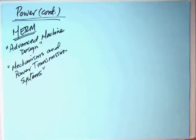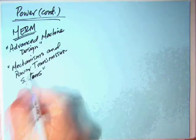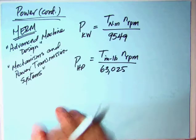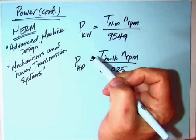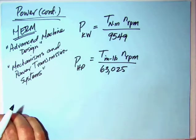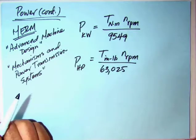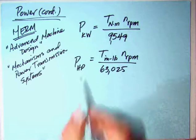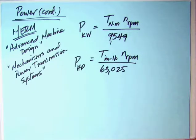From this particular chapter, and two other chapters in the MERM—the advanced machine design chapter and the chapter on mechanisms and power transmission systems—the following two equations appear. You have power in kilowatts: torque is to be in newton meters, your angular velocity is to be in RPM, and you divide that by 9,549. Power in horsepower for the U.S. system: you want to have inch pounds, and then the speed in RPM, and then this 63,025. What are these?